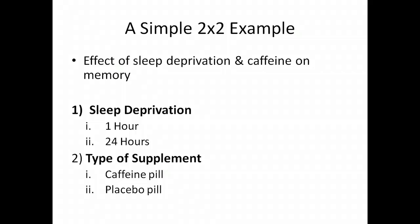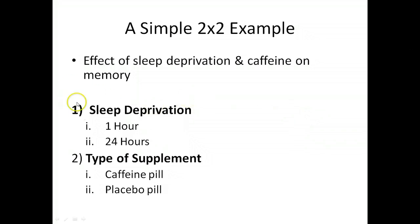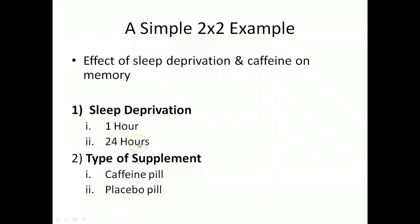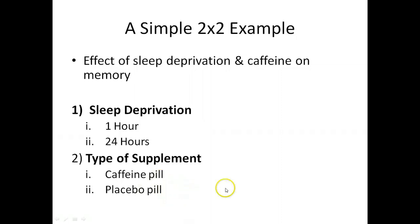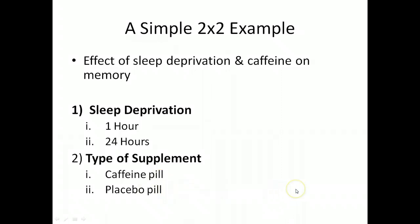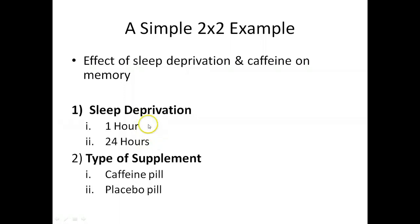We're going to walk through a very simple two-by-two example — a two-factor experiment examining the effect of sleep deprivation and caffeine on memory. Our first factor is sleep deprivation: we either deprive participants of sleep for only one hour, which is pretty much nothing, or a full 24 hours. Our second factor is type of supplement — some participants receive a caffeine pill and others receive a placebo pill. It's a two-by-two design because we have two levels in each factor.